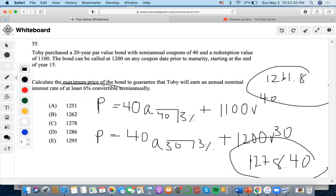So when we're calculating the maximum price of the bond, we want to choose the lowest price of the bond. So that is why the answer is B.